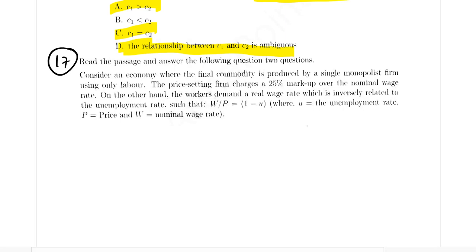Hello students, let's solve DSE 2022 paper question number 17. We are considering an economy where the final output is produced by a single monopolist firm using only labor.